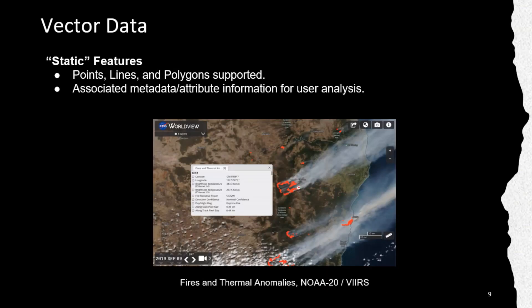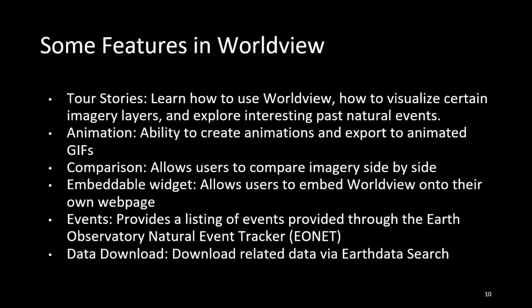An example of vector data in Worldview shows the FIRMS fires and thermal anomalies data from the VIIRS instrument on board NOAA-20 — this is the same active fire data viewable in FIRMS, which Jenny will discuss later. The vector data in Worldview is still being developed; additional features coming soon include support for arrow flow visualizations with inherent magnitude and direction.